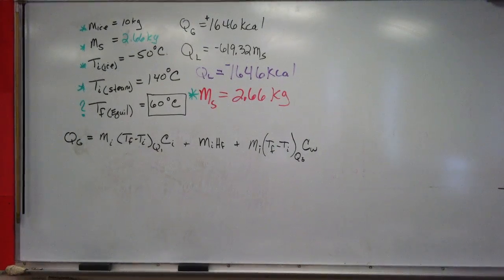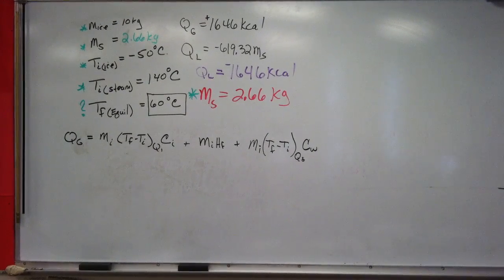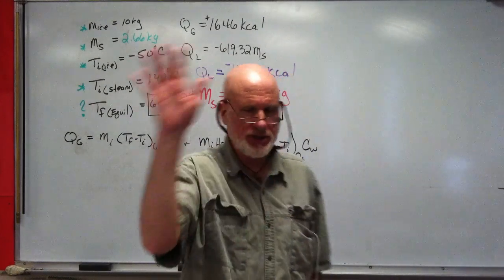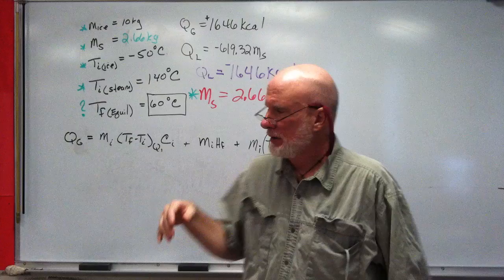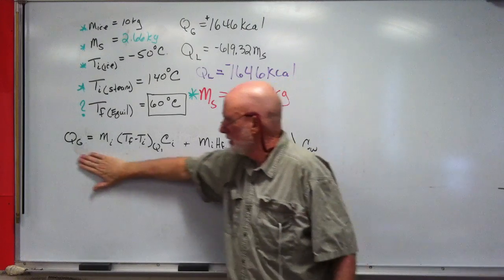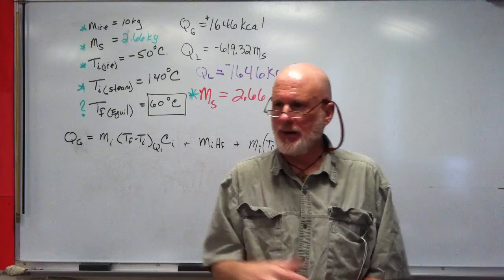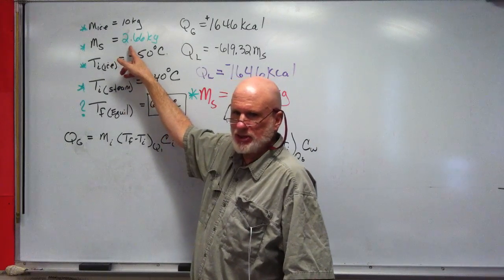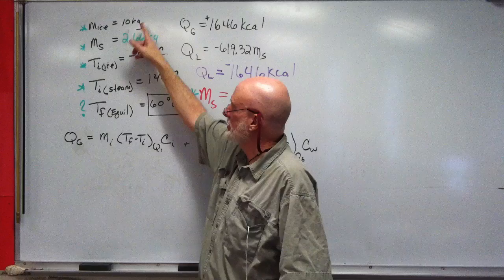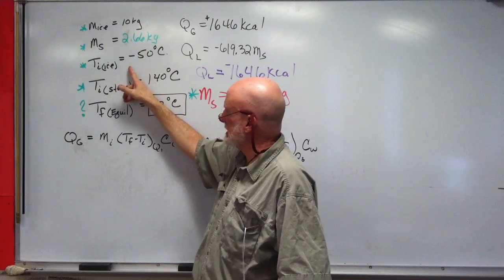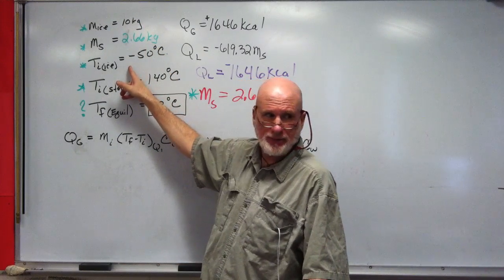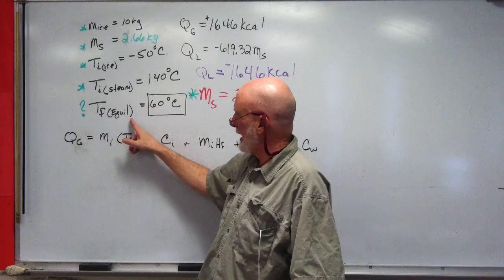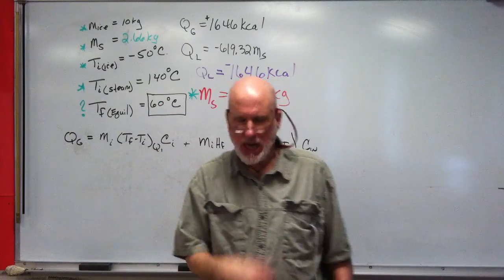Okay, let's do this again. This is take two. I want to use the same data we used last time, but we're going to use mass of steam is 2.66 kilograms, same mass of ice, same initial temperature of ice, same initial temperature of steam, and we're going to look for—we know it's 60 degrees.